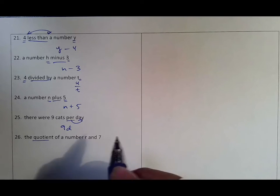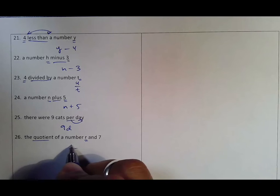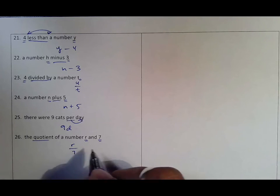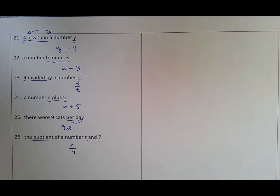The last one: the quotient of a number r and seven means we're going to look at a fraction. Whatever's first goes on top, whatever second goes on the bottom, and that is all.